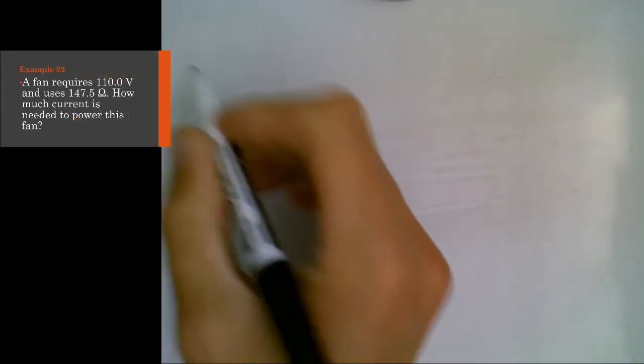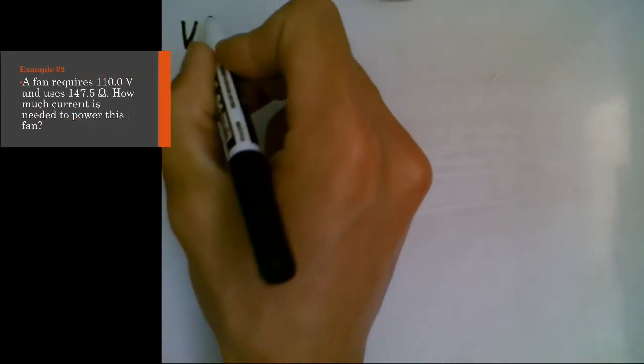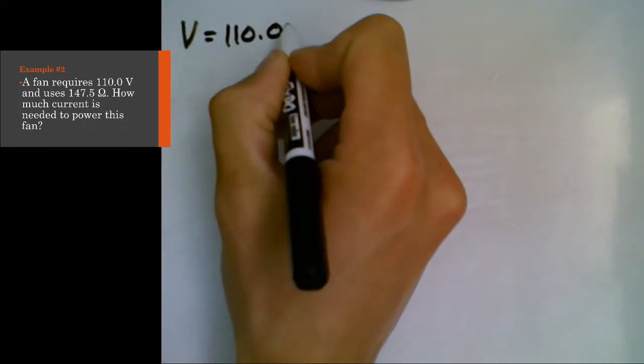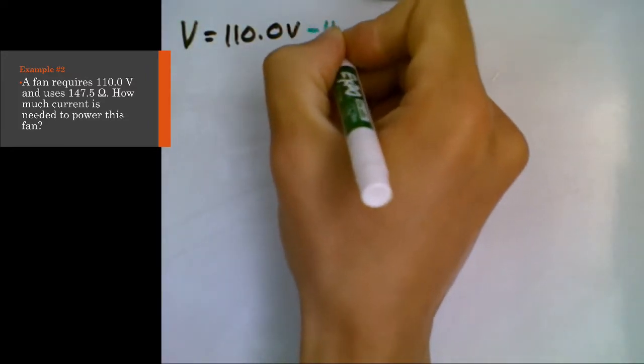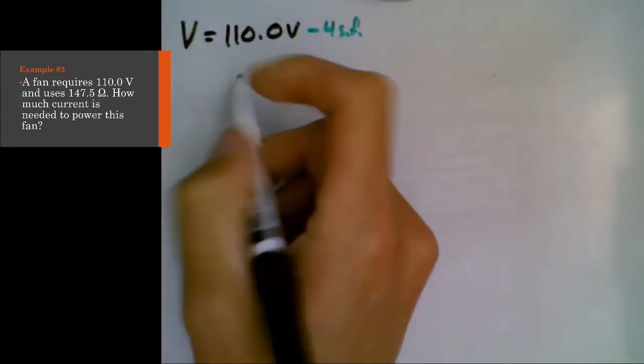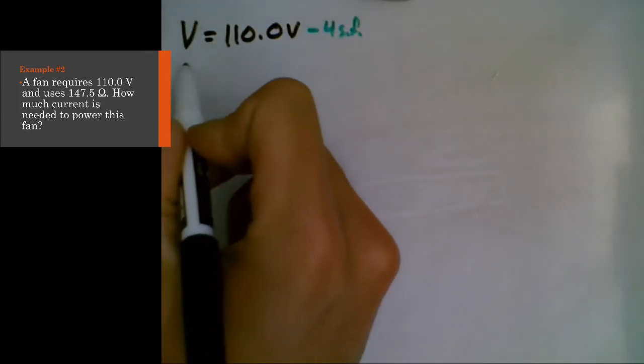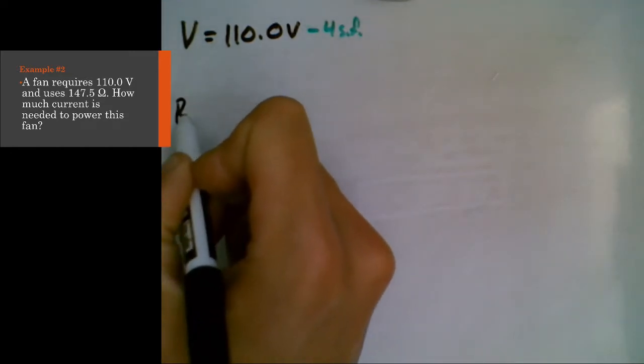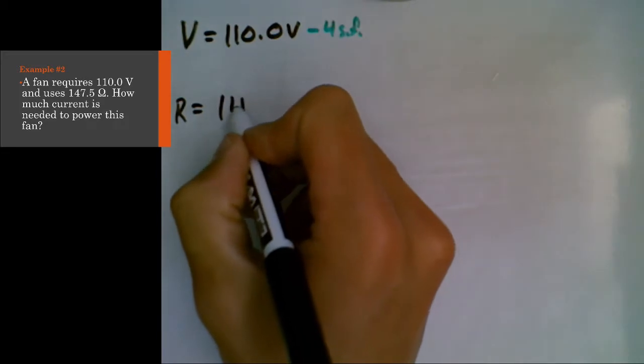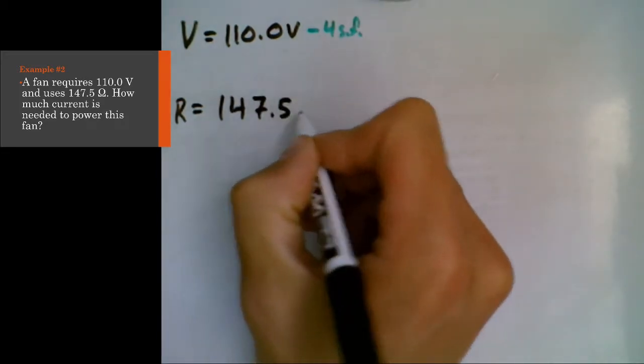Same thing as before, let's organize our information. So we know that our voltage is 110.0 volts. If we want to think sig figs right away, you should already realize we're dealing with four sig figs. That's why that zero at the end is important. This isn't like math class where you can just pretend like there's no decimal places. We actually got to keep those here in science.